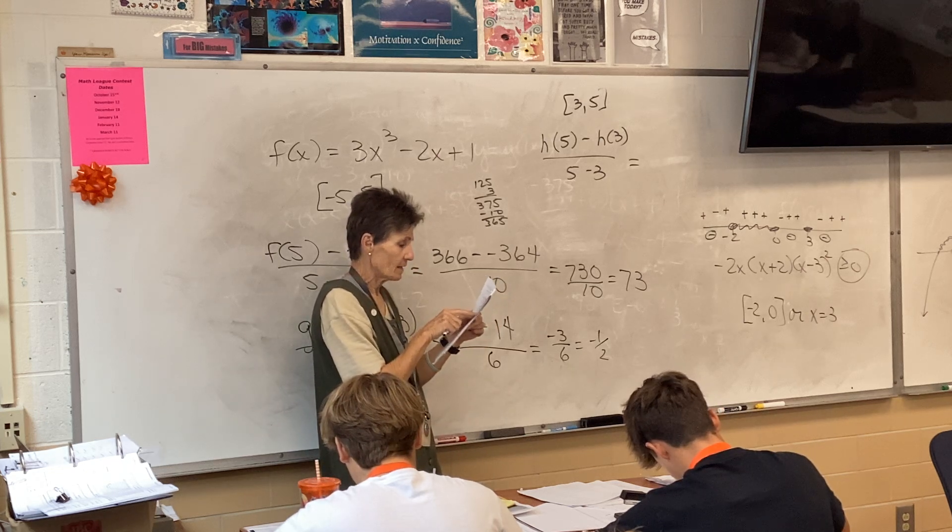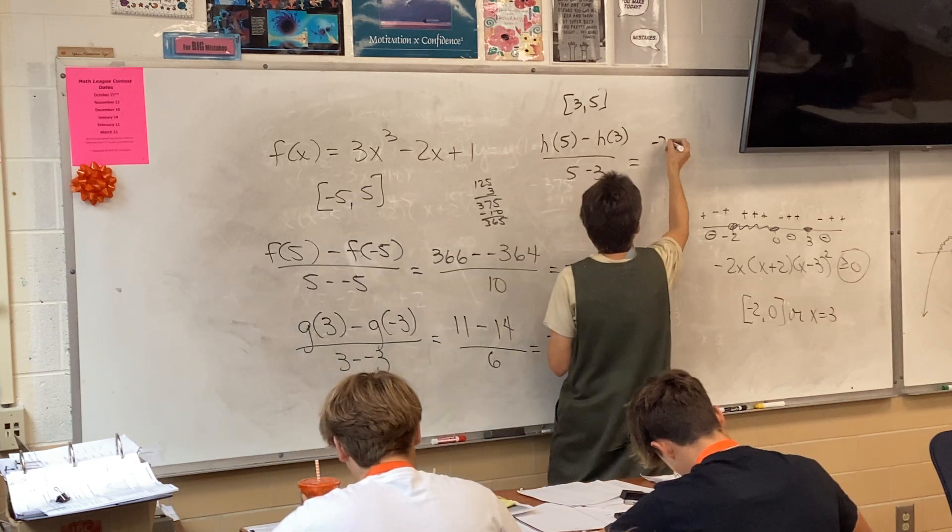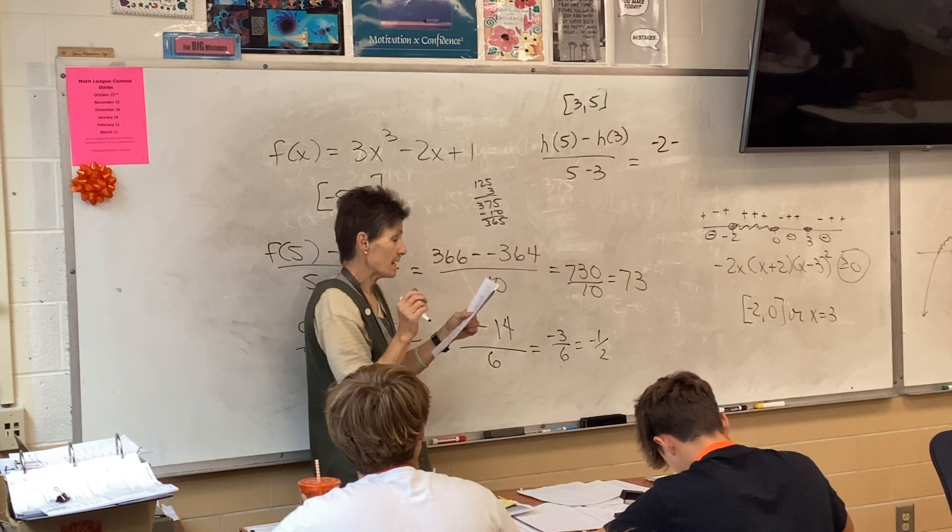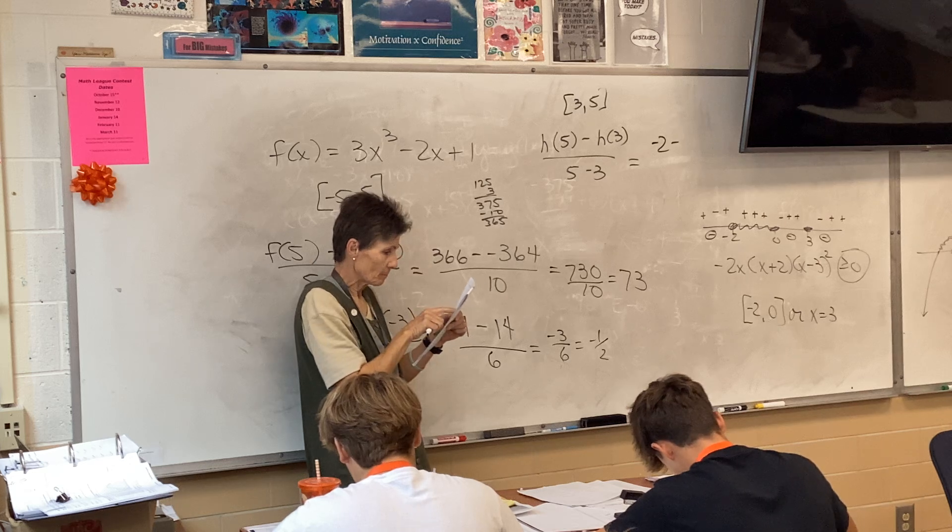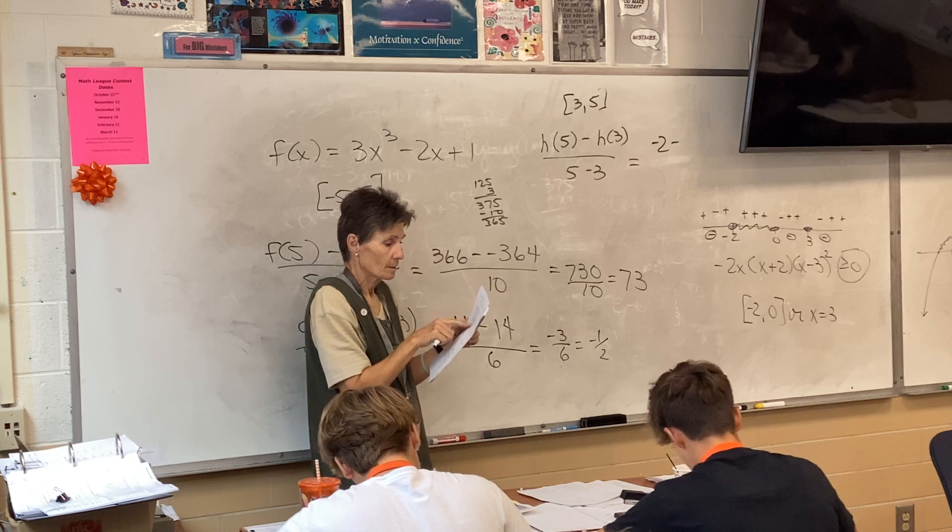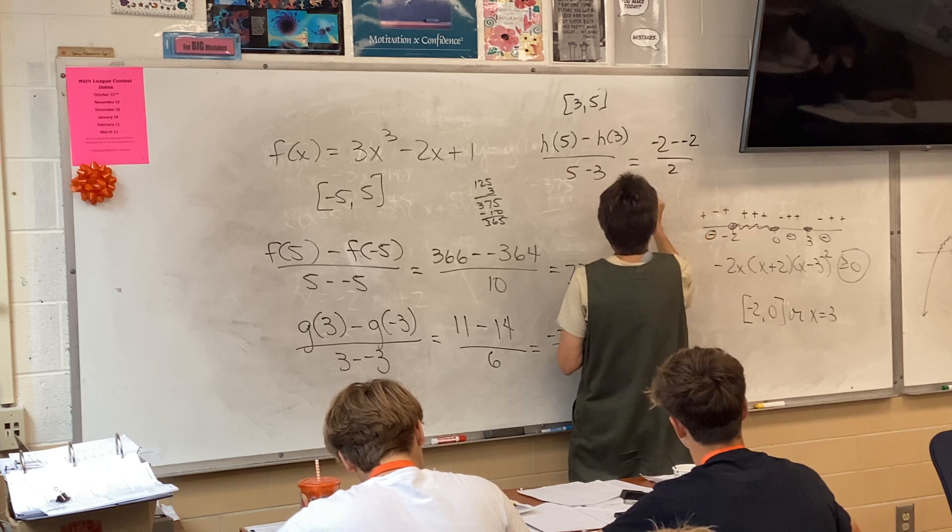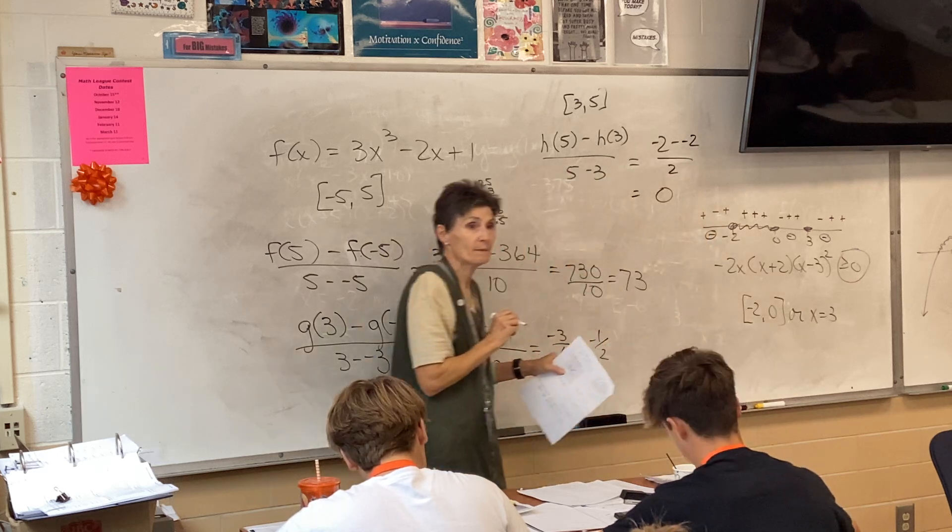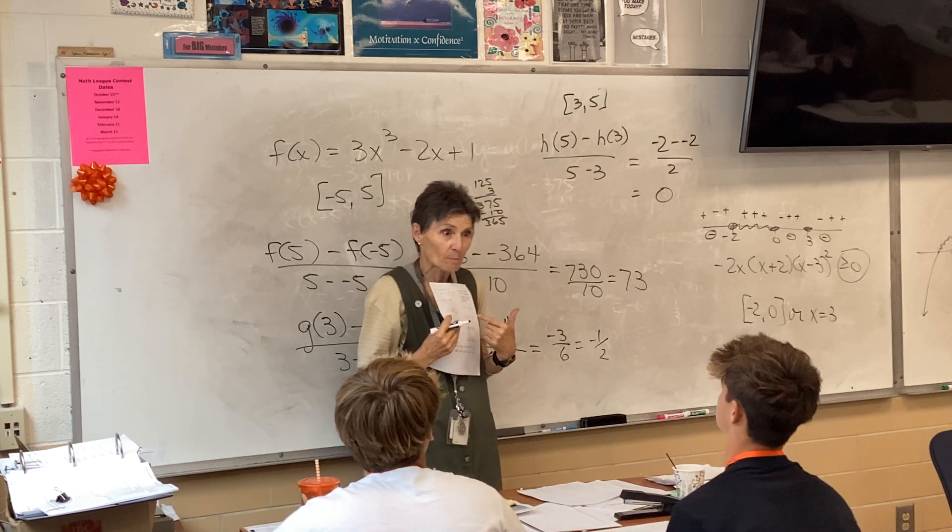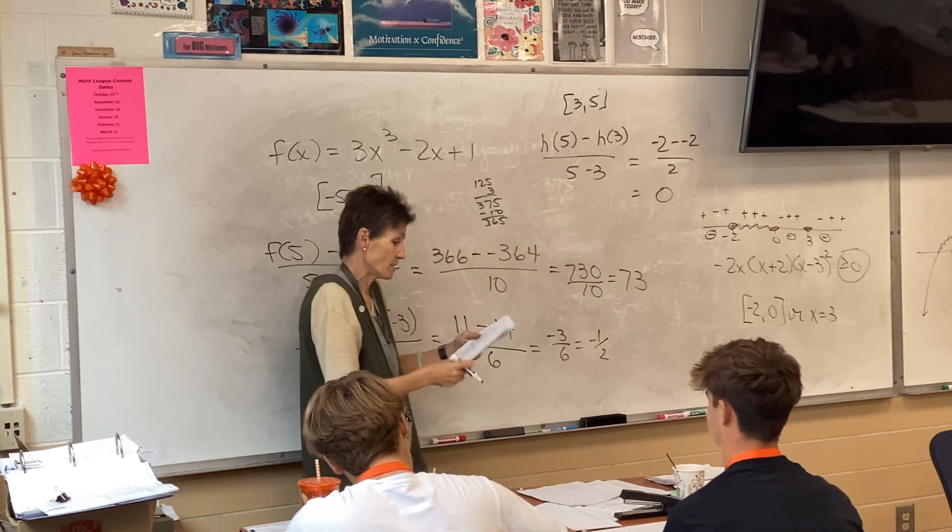So let's look at our picture. What's H of 5? Negative 2. Did you get negative 2? And then I need H of 3. Is it also negative 2? And then I need H of 3. So the rate of change is going to be 0. And of course that makes perfectly good sense looking at the picture. What do we have there? A horizontal line. So of course the rate of change is 0.